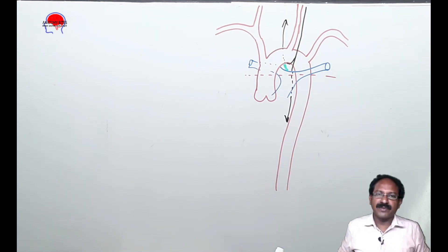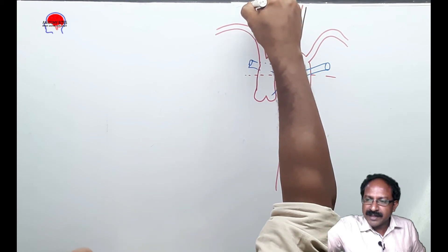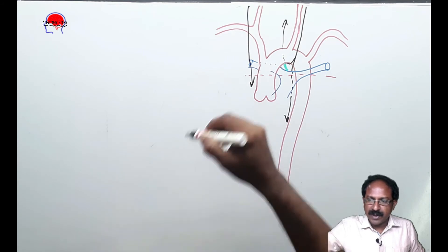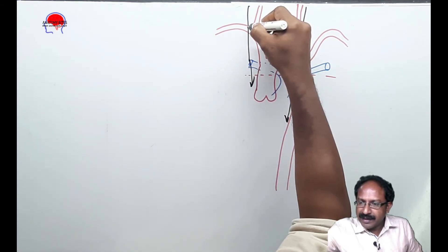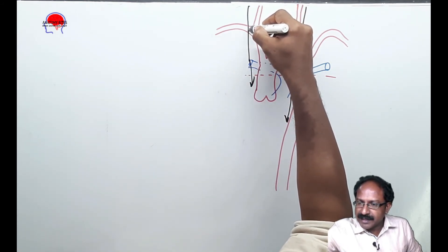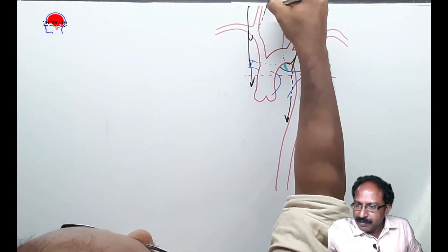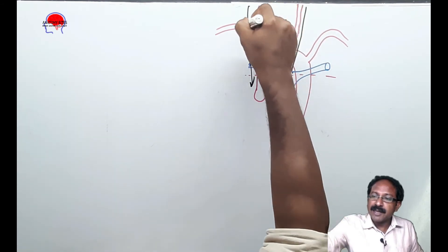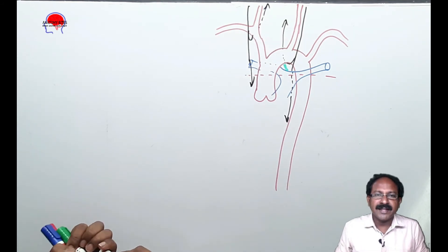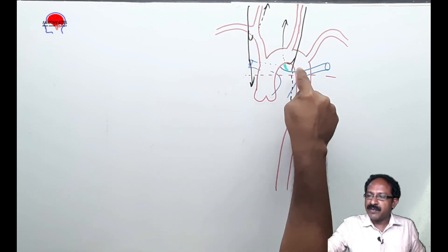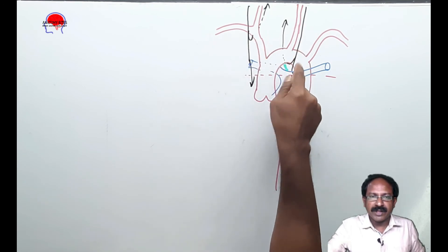The right vagus crosses the right subclavian artery and descends down, giving the right recurrent laryngeal nerve below the right subclavian artery. This is a major difference: the right recurrent laryngeal nerve arises at a much higher level when compared with the left recurrent laryngeal nerve.